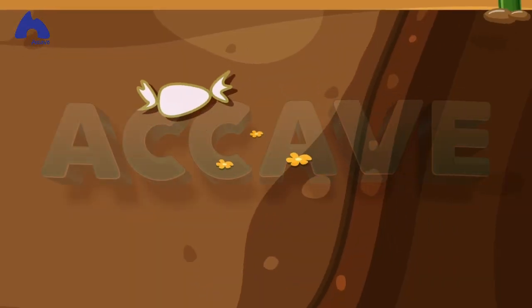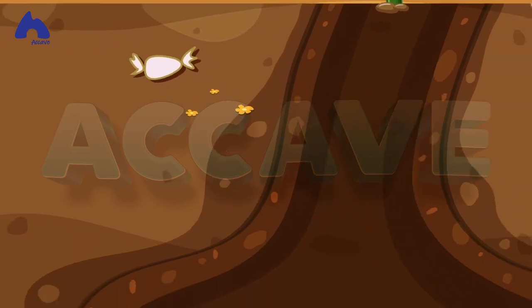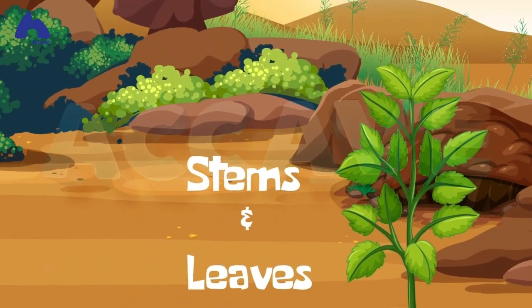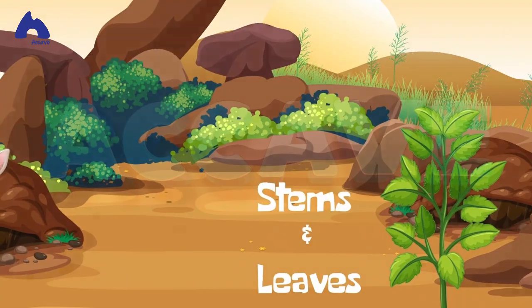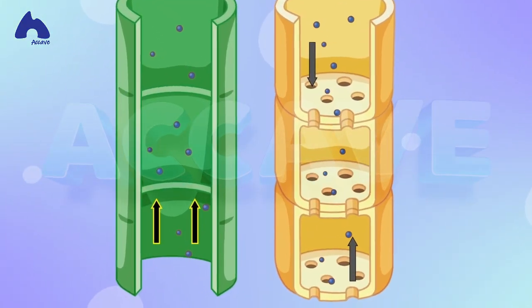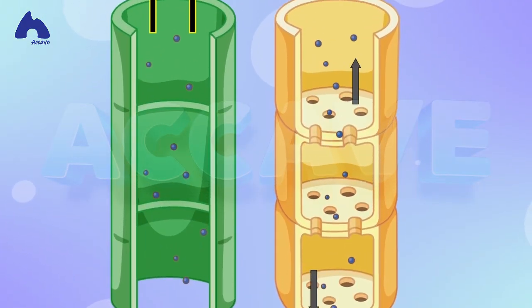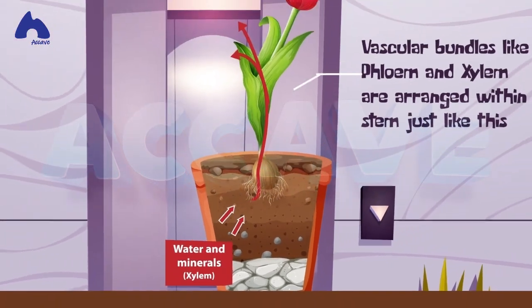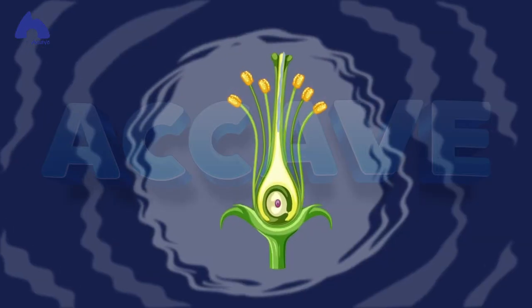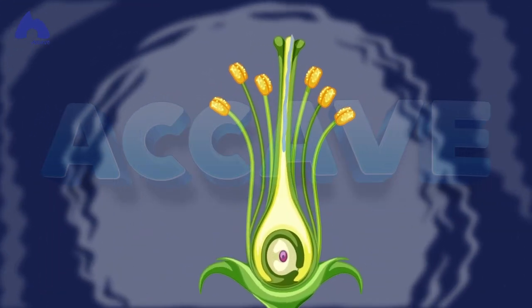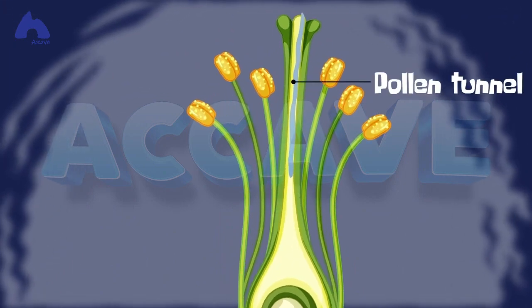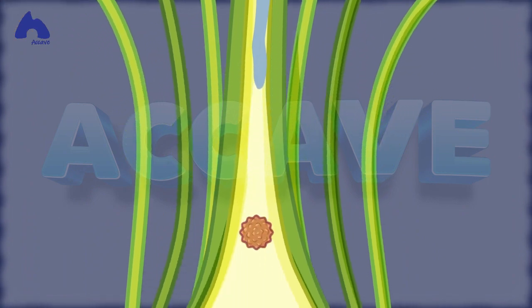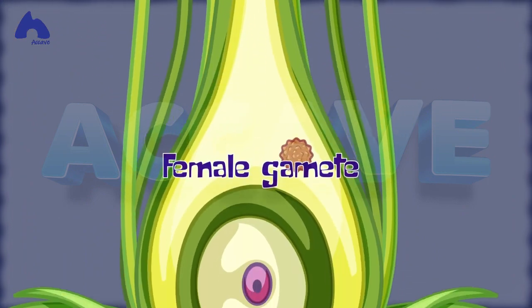Now tracheophytes, unlike thalophytes and bryophytes, actually have roots, stems, and leaves. Aside from that, they also have vascular bundles that they can use to transport food materials to different parts of the plant. They form something called a pollen tube, which is used to transport male gametes to female gametes.